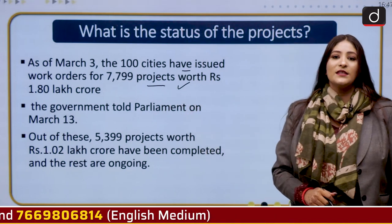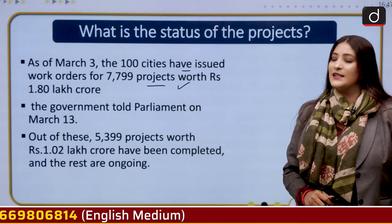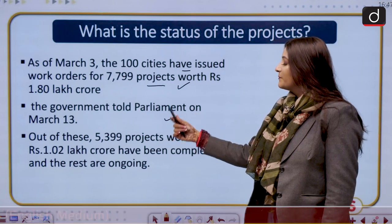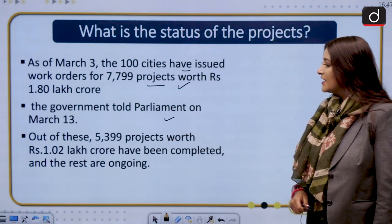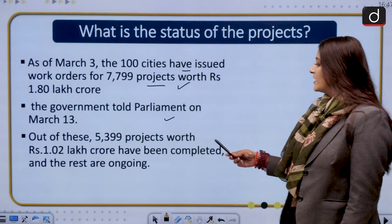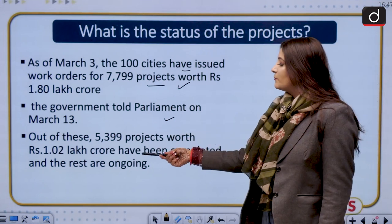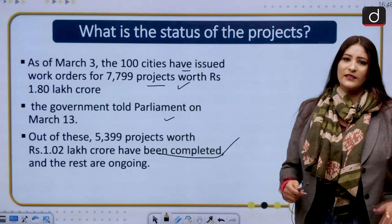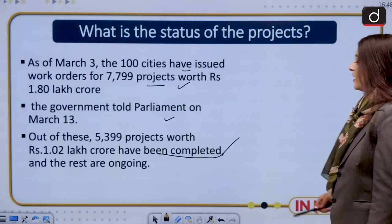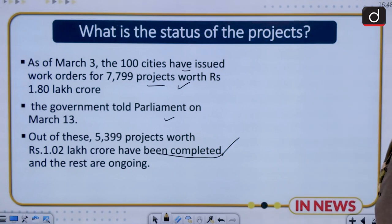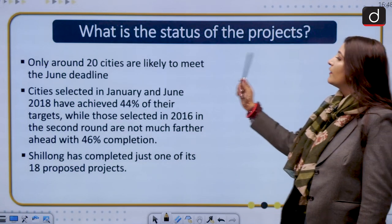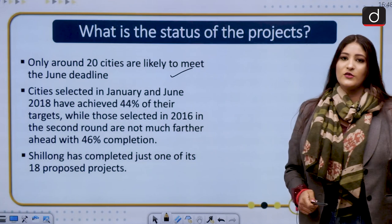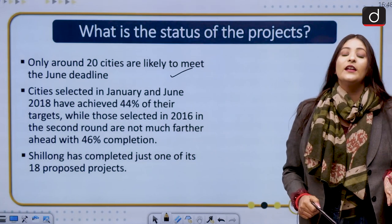As of March 3rd, the 100 cities have issued work orders for 7,799 projects worth rupees 1.80 lakh crore, as the government has told Parliament. Out of these, 5,399 projects worth 1.02 lakh crore rupees have already been completed and the rest are ongoing. However, only around 20 cities are likely to meet the June deadline.